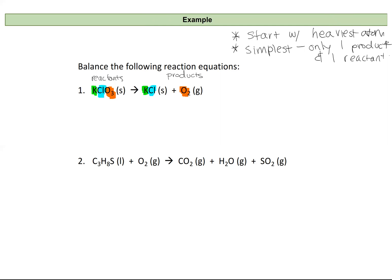Looking at potassium: I have one potassium atom on my reactant side and one on my product side, so those are balanced. For chlorine: I have one on my reactant side and one on my product side, so those are balanced too. This seems easy until I come to oxygen — I have three oxygen in my reactants and only two in my products, so I need coefficients to bring them to the same number. Two and three suggest a least common denominator of six.